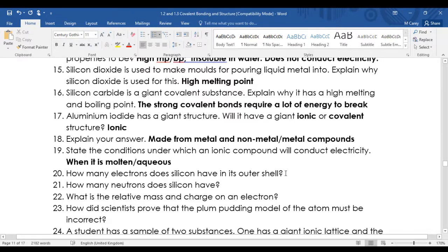You have to look at the periodic table for this. Silicon is element number 14, it's in group 4. How many neutrons does silicon have? It has 14 protons and a mass number of 28, so taking that away from each other you're going to get 14.